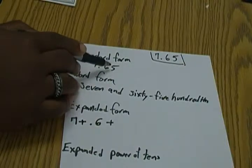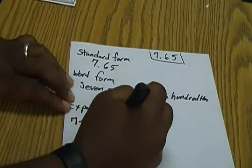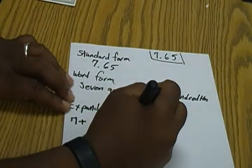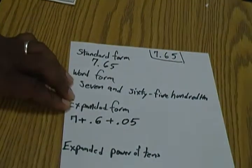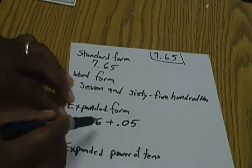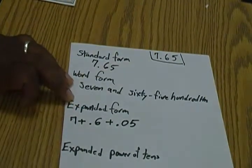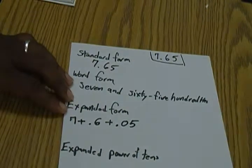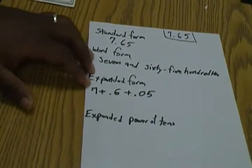All right, and our five is in the hundredths place, so we're going to write plus five hundredths. So when we add that all together, seven plus six tenths plus five hundredths, it gives us seven and sixty-five hundredths.